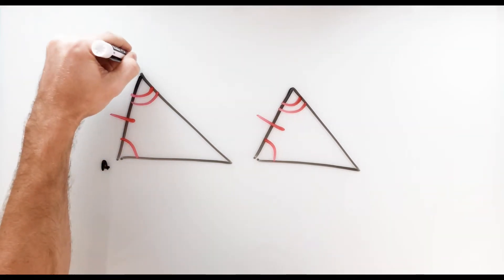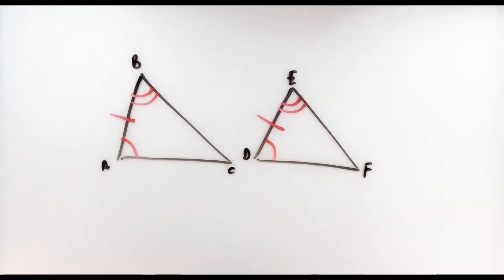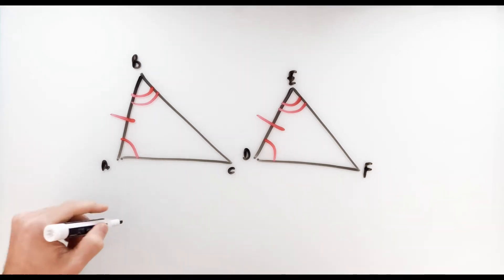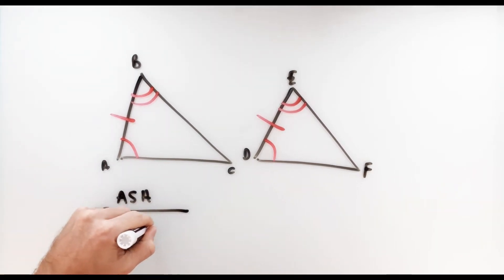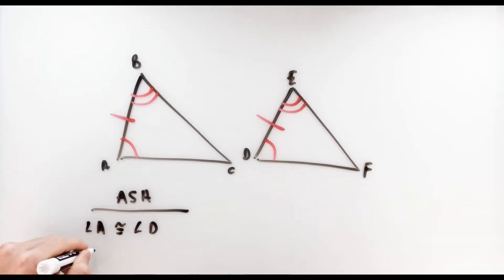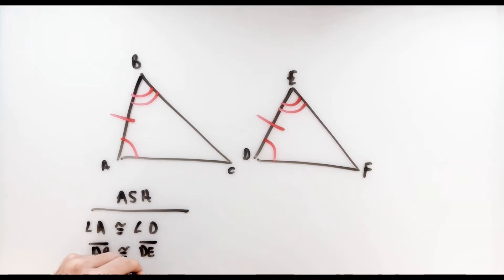I'll put some letters up here — ABC and DEF. For angle-side-angle, we know that angle A is congruent to angle D, segment AB is congruent to segment DE, and angle B is congruent to angle E. These three pieces of information are what we use to determine that these are congruent by angle-side-angle. Now, once we know the triangles are congruent, we can make conclusions about the non-marked parts of these two triangles because, by definition, corresponding parts of congruent triangles are congruent.